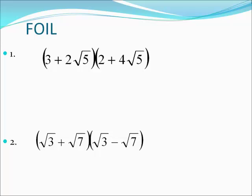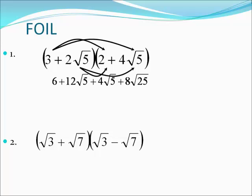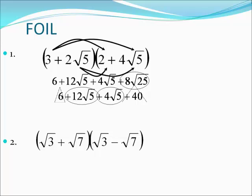For FOILing — same process: first times first, outer times outer, inner times inner, last times last. First times first: three times two is six. Outer: three times four is twelve, √5. Inner: two times two is four, √5. Last: two times four is eight, and five times five is twenty-five — so eight√25. Twenty-five is a perfect square, it's five, so eight times five is forty. We have like terms: twelve√5 and four√5 combine to make sixteen√5. And six and forty combine to make forty-six. Final answer: forty-six plus sixteen√5.